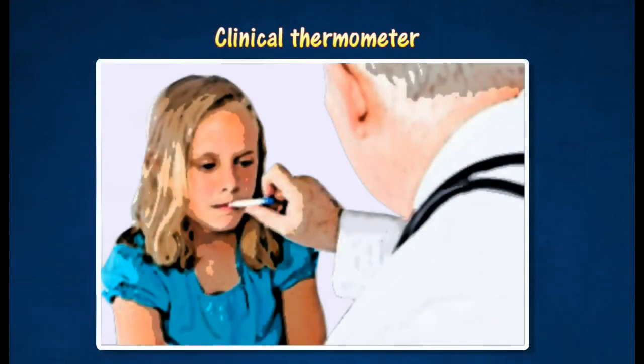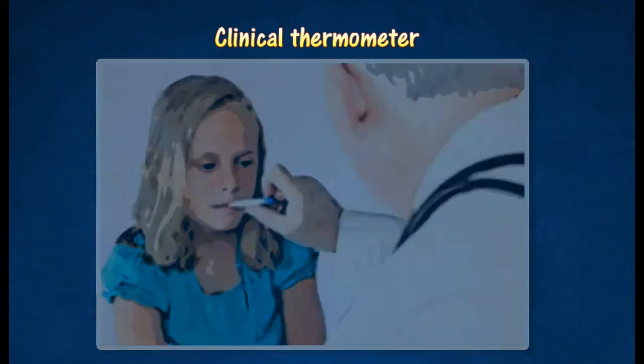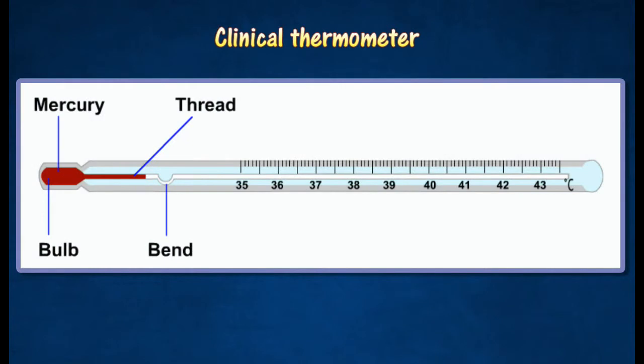The clinical thermometer is a special type of thermometer, commonly used by doctors and nurses to measure body temperature. The scale only extends over a few degrees, on either side of the normal body temperature of 37 degrees Celsius.